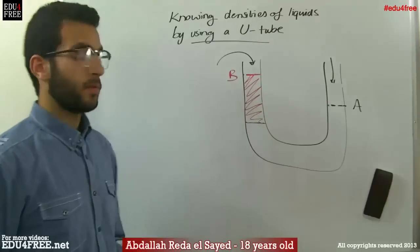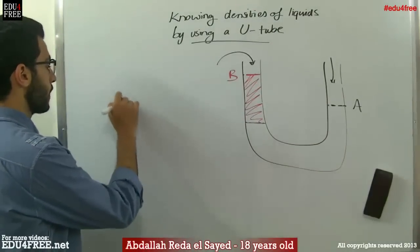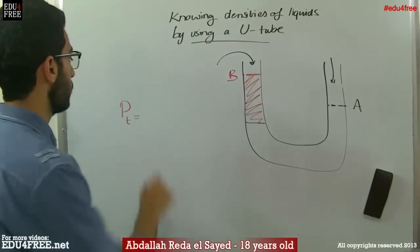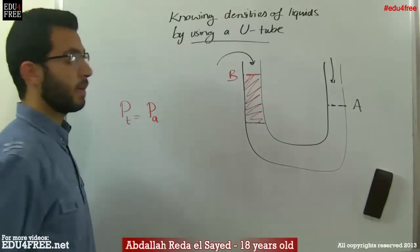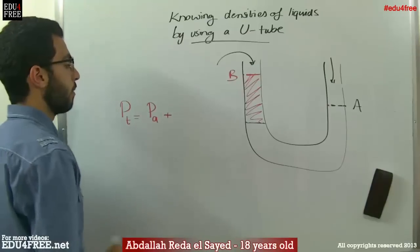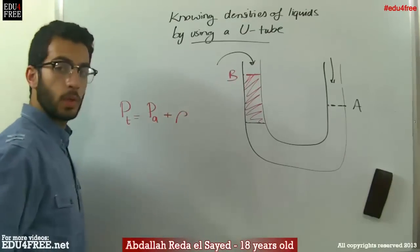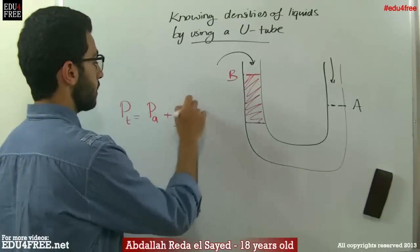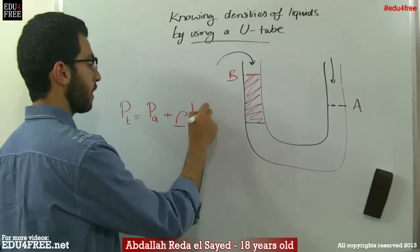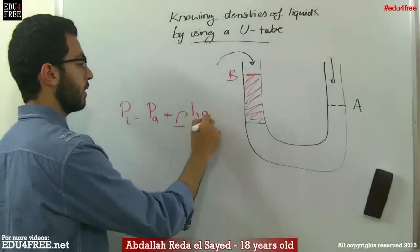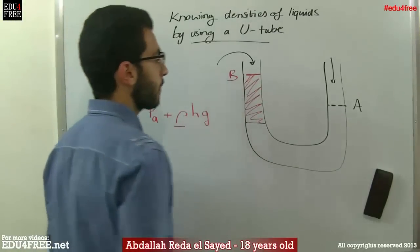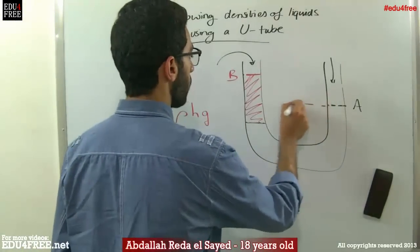We already knew from the previous video that the total pressure exerted at a point in a liquid equals the atmospheric pressure, if this liquid is exposed to atmospheric air, plus the density of the liquid multiplied by the height of water above the point, and we have the gravity.